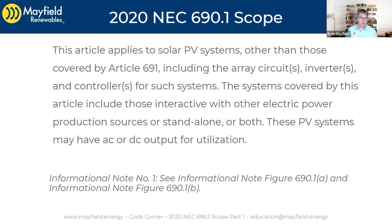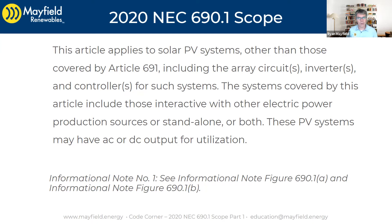For this video, we want to really focus in on this informational note — actually just two parts of it to begin with. In 2017, the figures changed in the 690.1 section. 690.1 section B is where you're going to find these in the very front part of the code. They may seem like small changes in pictures, but they actually have some pretty big implications. I want to go through and talk about really just the first two of them, so that we can start to set the stage and understand how these will apply and how we're going to use them later on in different code sections.